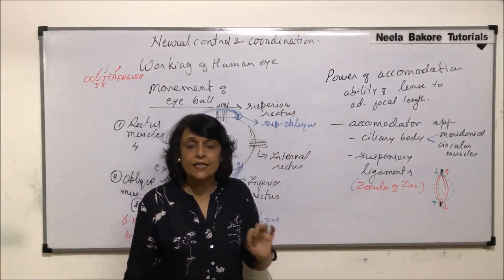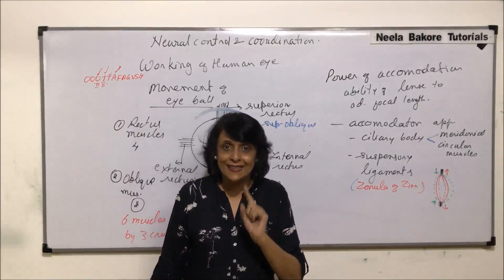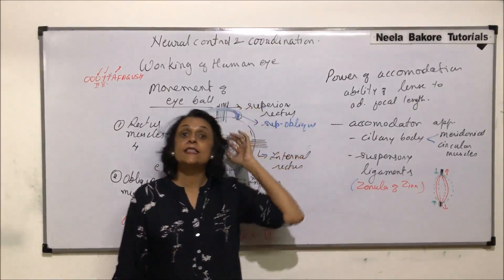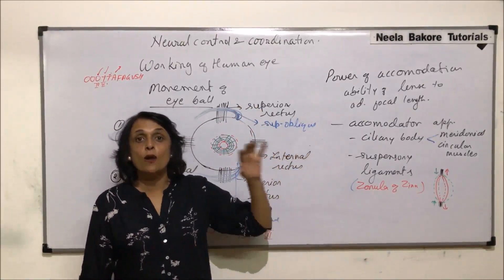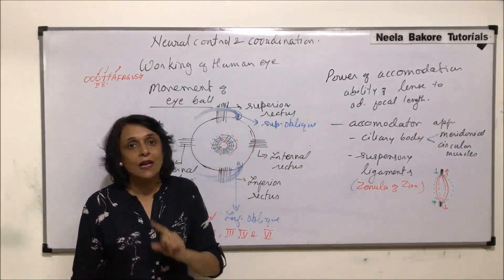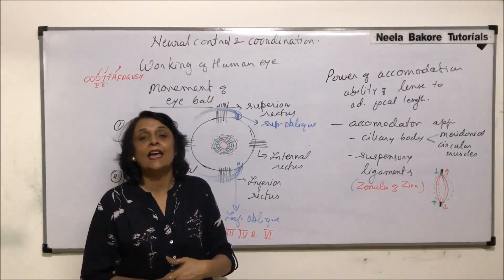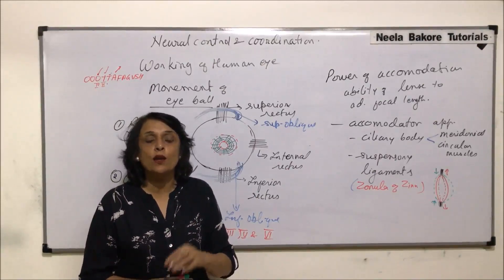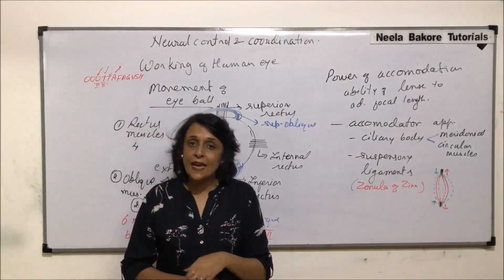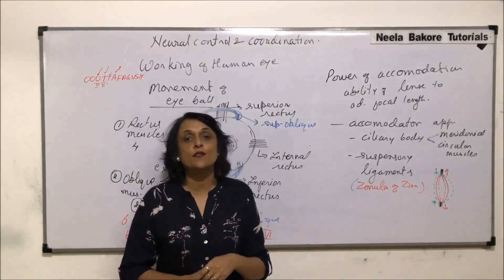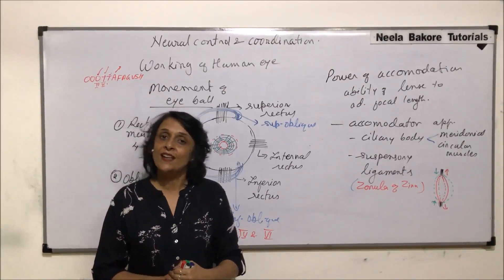If there is any problem in these structures or in the shape of the eyeball, the image is not formed on the retina, and this gives rise to defects of the eye. In the next segment, we will take up various kinds of defects of the eye and how they can be corrected.